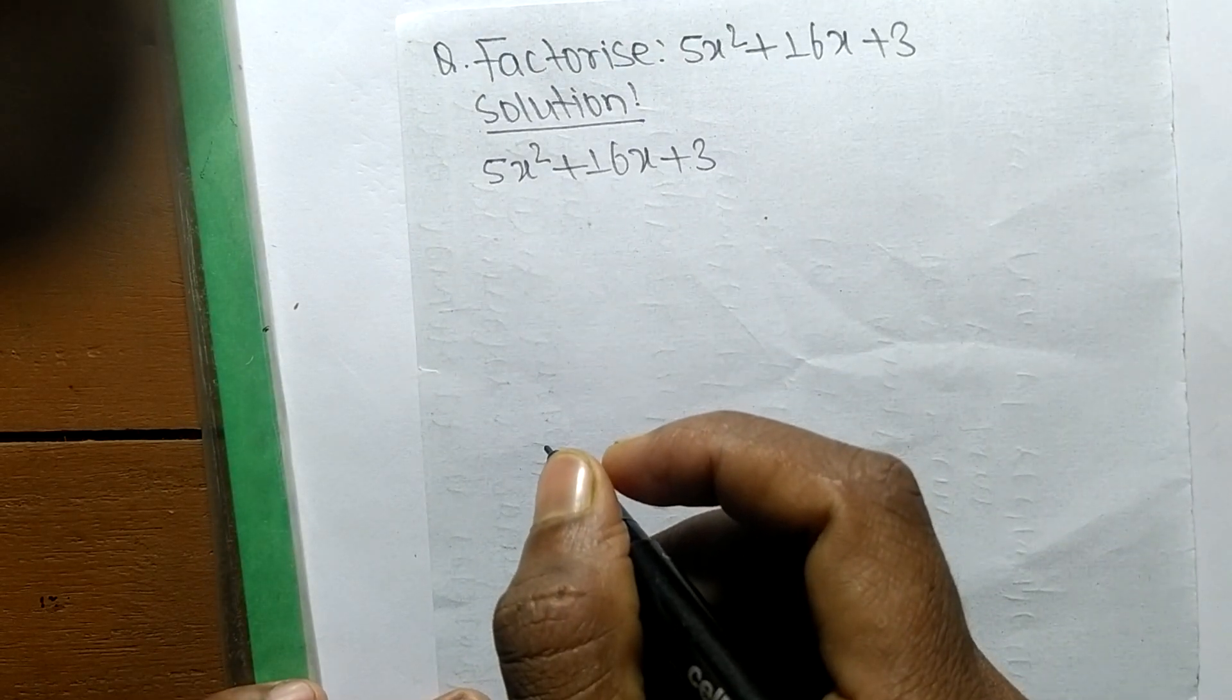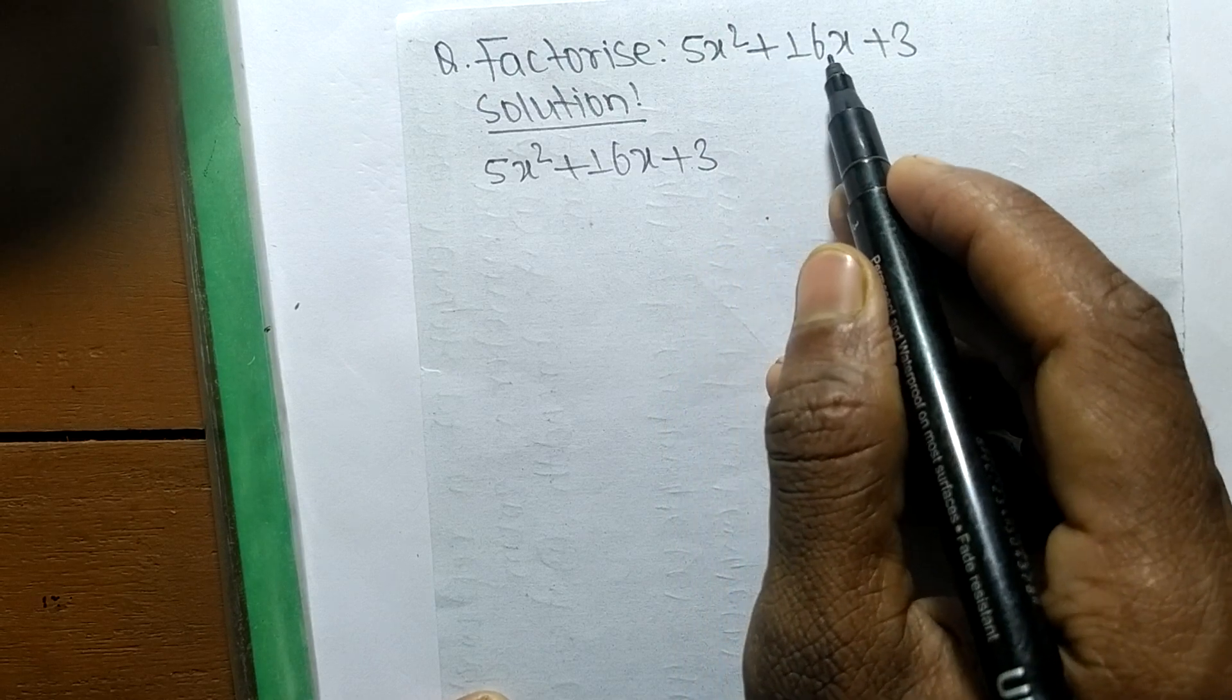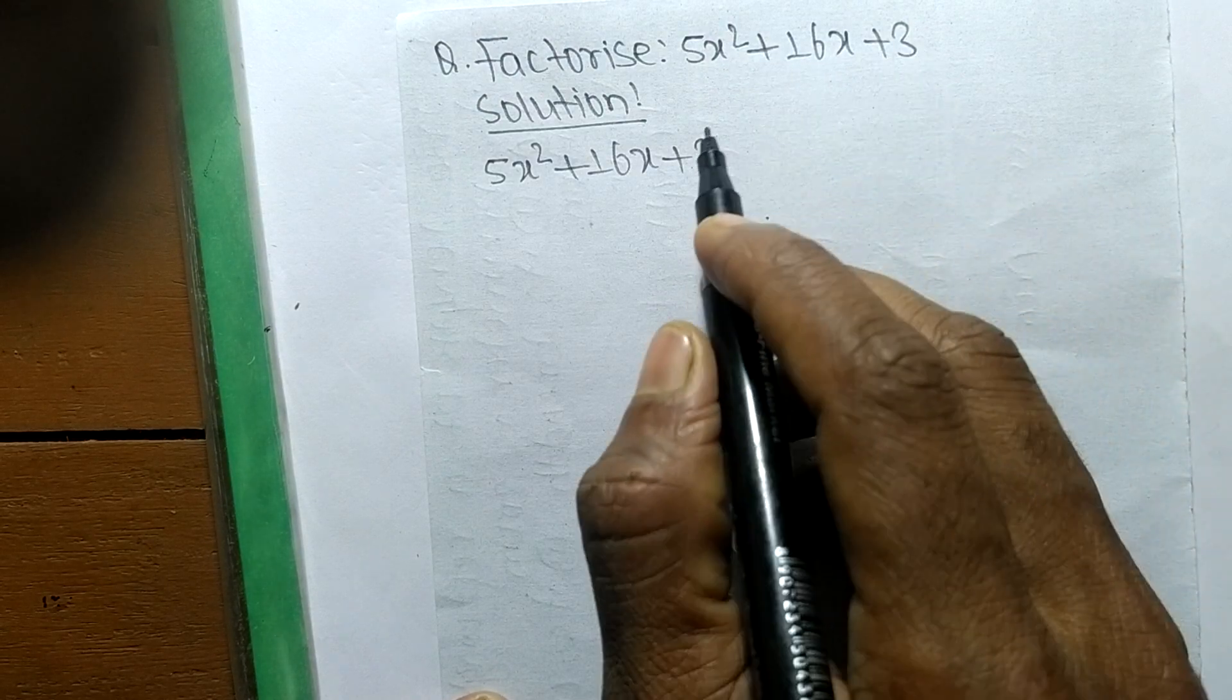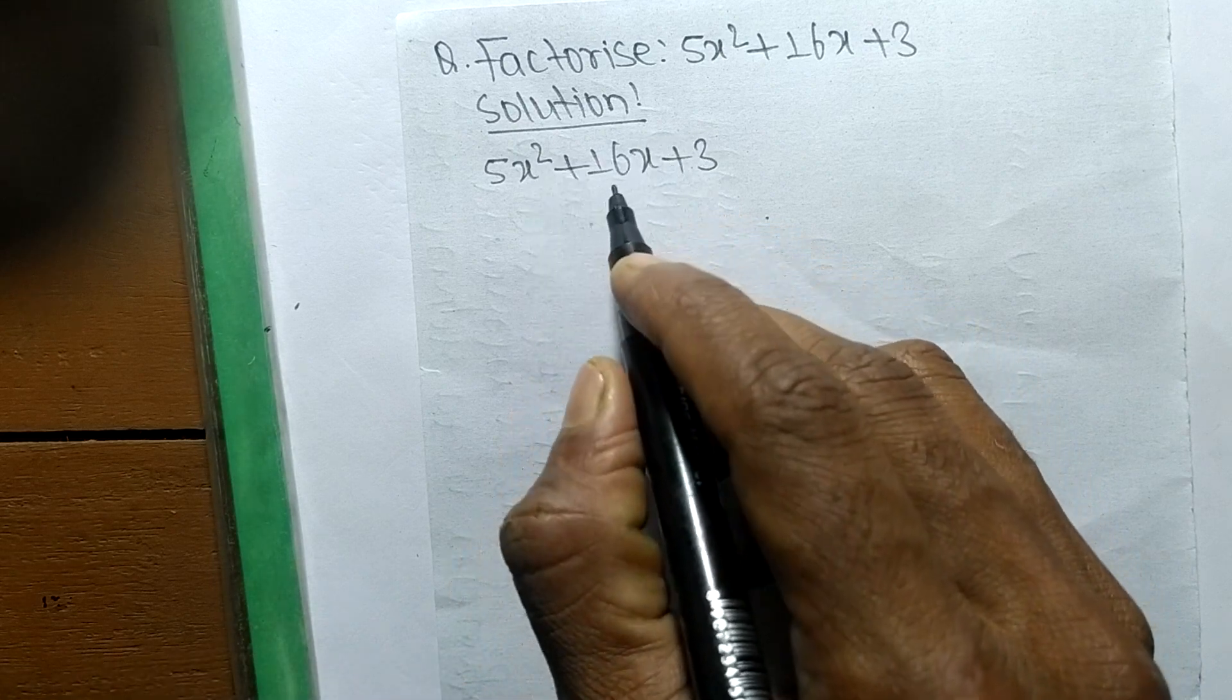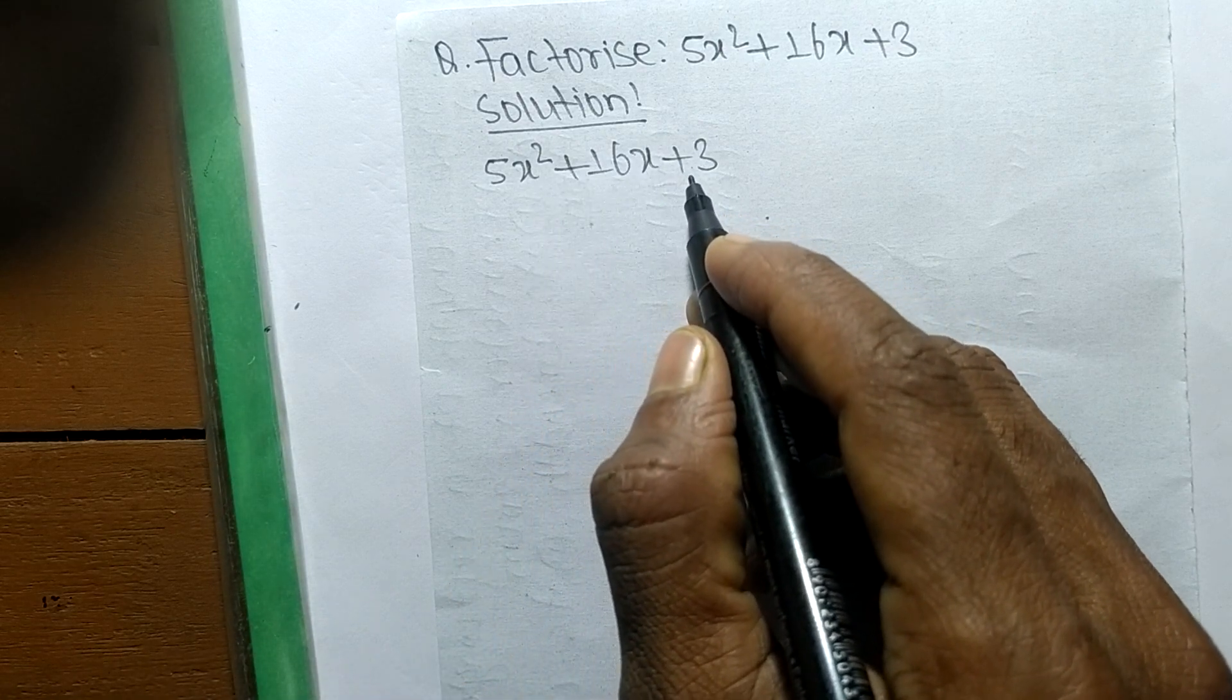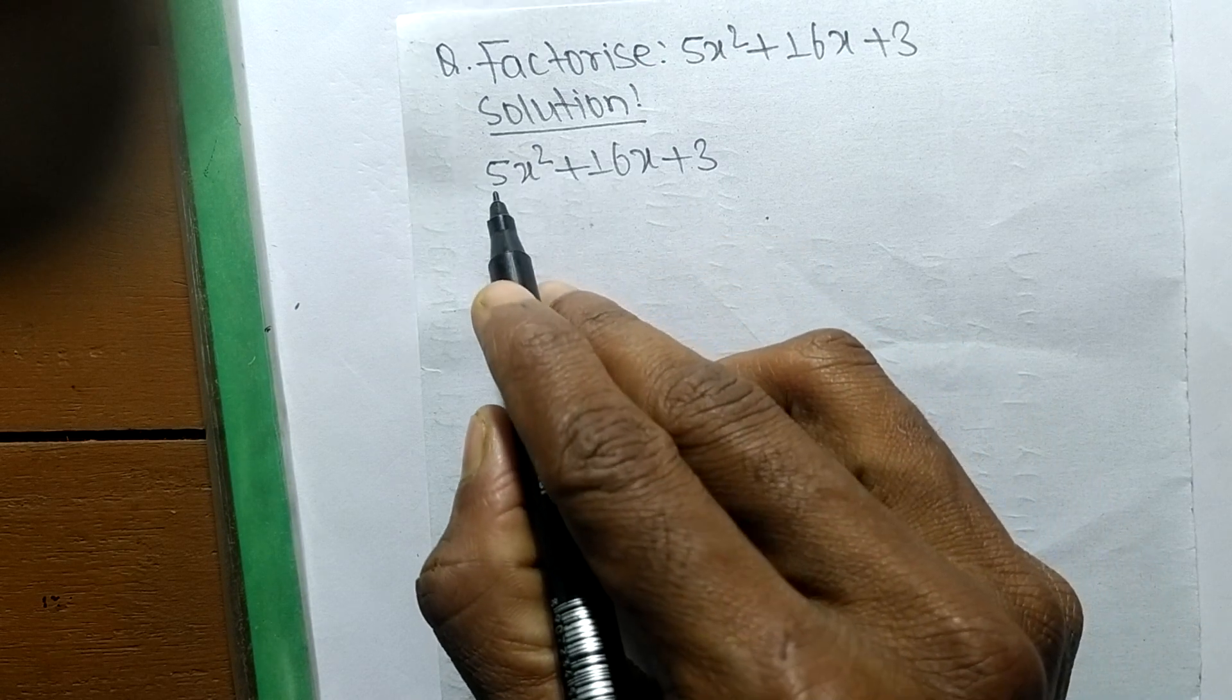Today in this video we shall learn to factorize 5x² + 16x + 3. For the solution of factorize 5x² + 16x + 3, first we have to find out the prime factors of the first and last number.